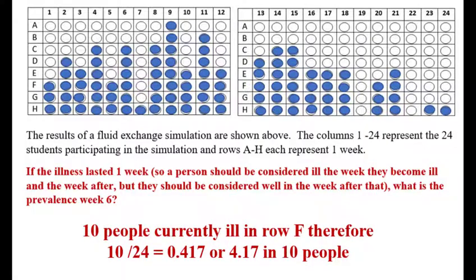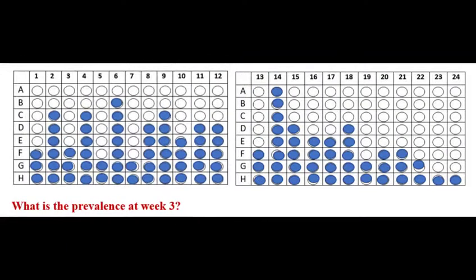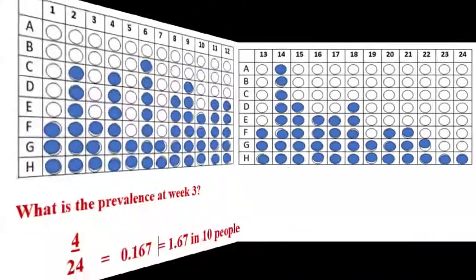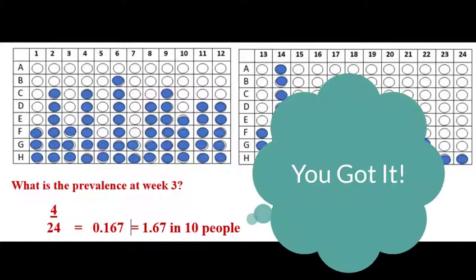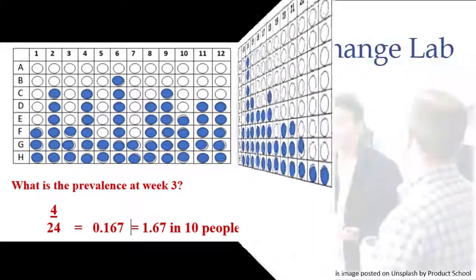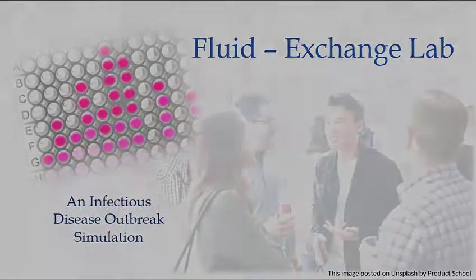Time for you to try it on your own. Hit pause on the video and calculate the prevalence in week 3. If you came up with 1.67 in 10 people, well done! If not, you better try that again. Contact me if you have questions.